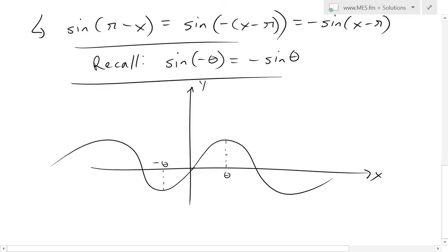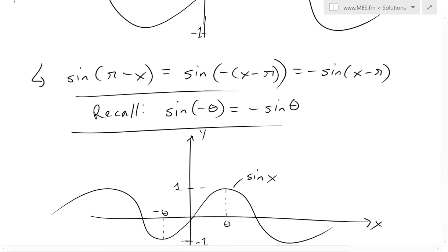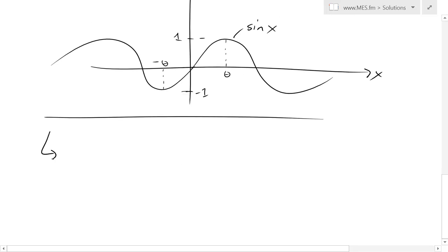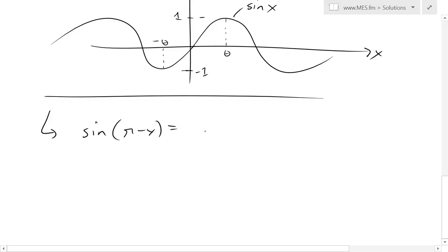Here I've quickly drawn it out: if you have sine of x at angle theta, when you go to negative theta it's exactly the same value but negated. So the function gets flipped over. Going back to our function, we have sine of pi minus x equals negative sine of x minus pi. Because of the negative pi inside and the negative out front, this sine curve will be shifted to the left by pi and then inverted.